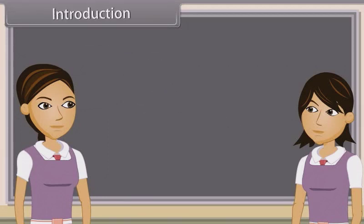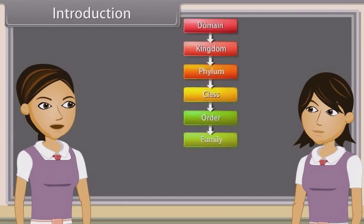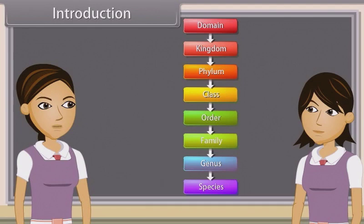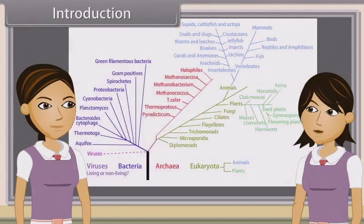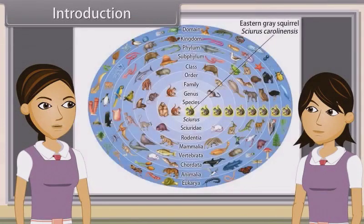Biological classification, or scientific classification in biology, is a method by which biologists group and categorize organisms by biological type, such as genus or species. Modern biological classification has its roots in the work of Carolus Linnaeus, who grouped species according to shared physical characteristics. These groupings have since been revised to improve consistency with the Darwinian principle of common descent.